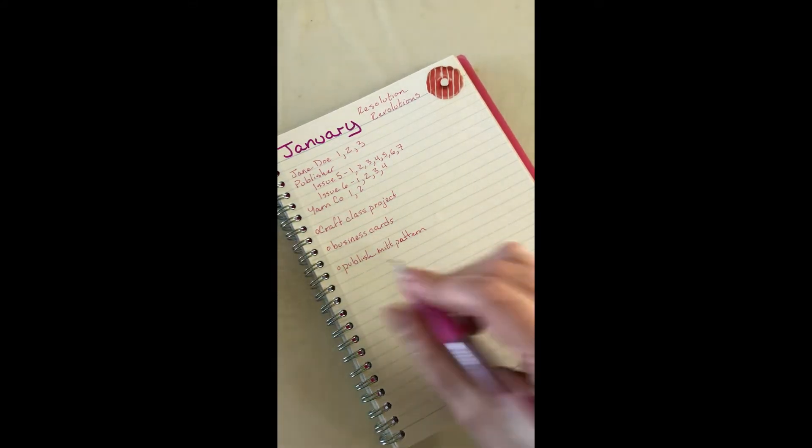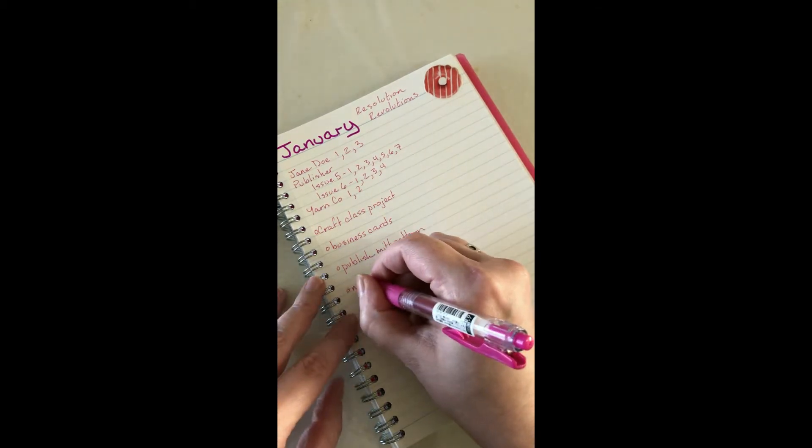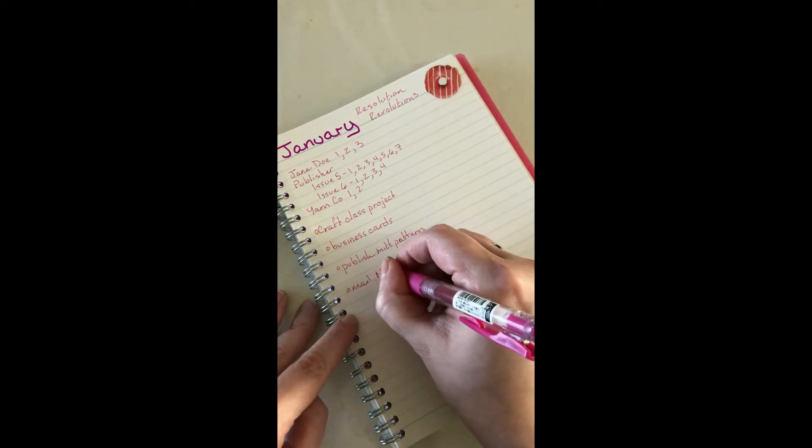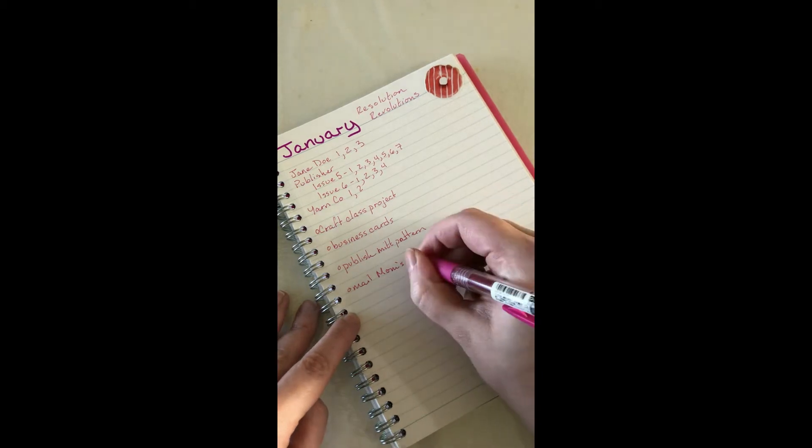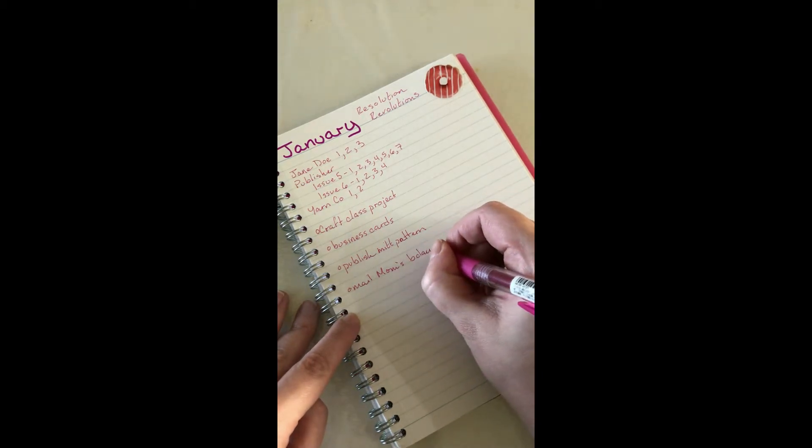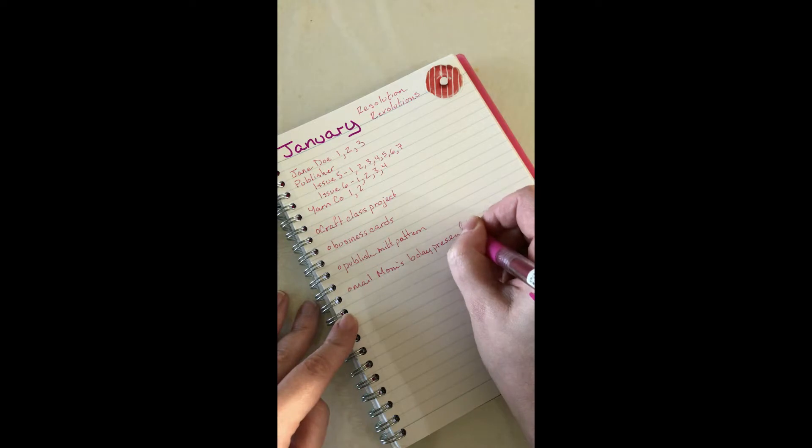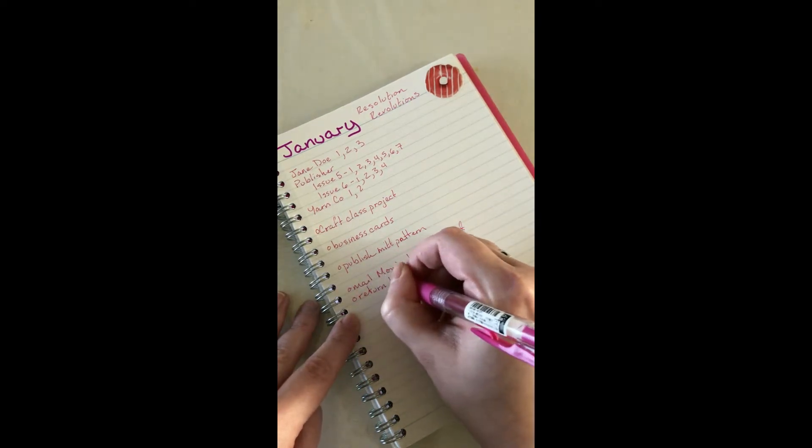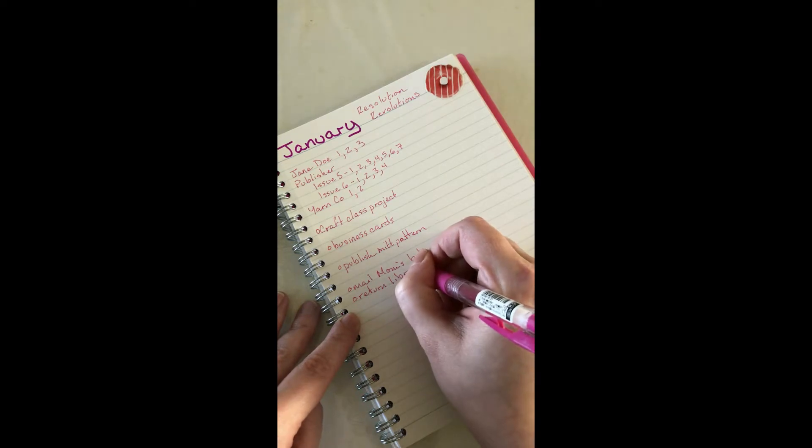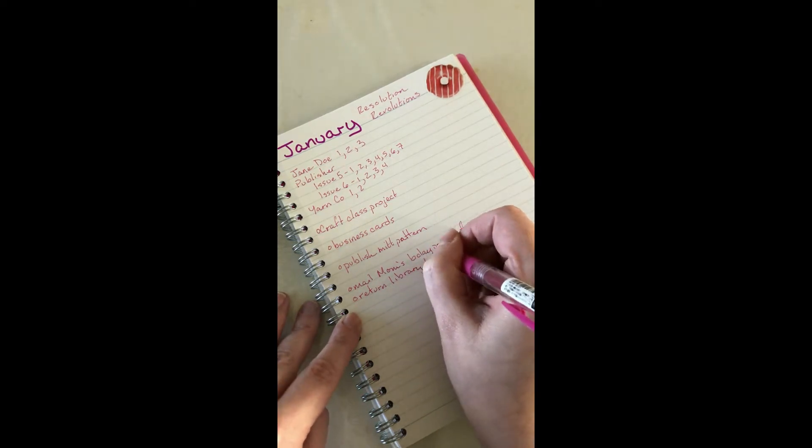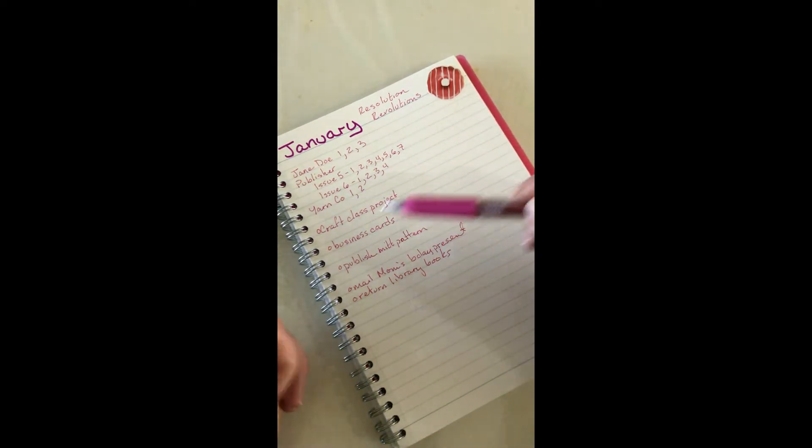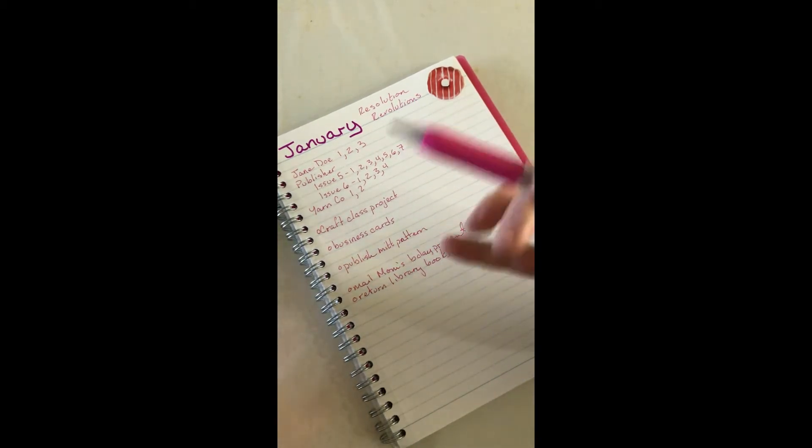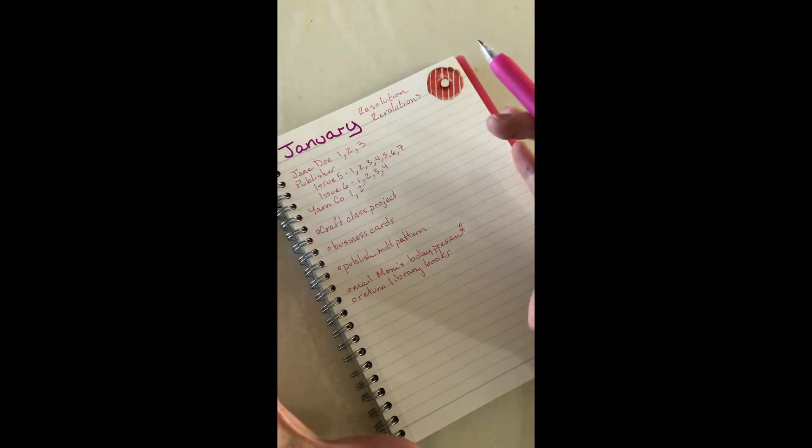I have to mail mom's birthday present, return some library books. I kind of just plop it all out. It's really just kind of a dump of ideas. Sometimes I do it on one sheet, it's a total mess, and then I write it nicely on the next sheet.